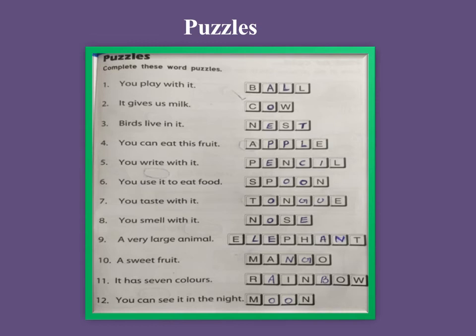A very large animal — its letters E-P-H-T are given, and the blanks need to be filled. So you can say the name is elephant. A sweet fruit — the name of that sweet fruit is mango. Number eleven: it has seven colors — rainbow. Number twelve: you can see it in the night — moon.